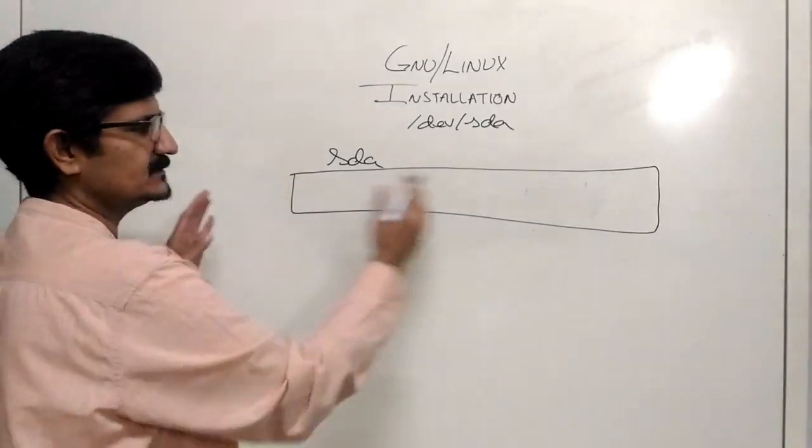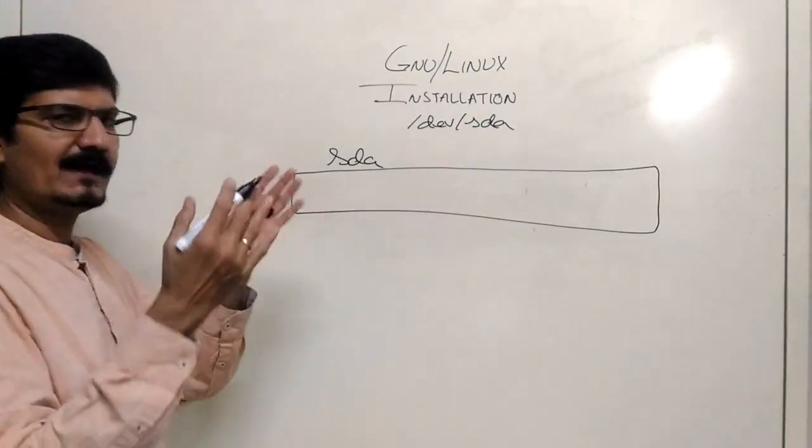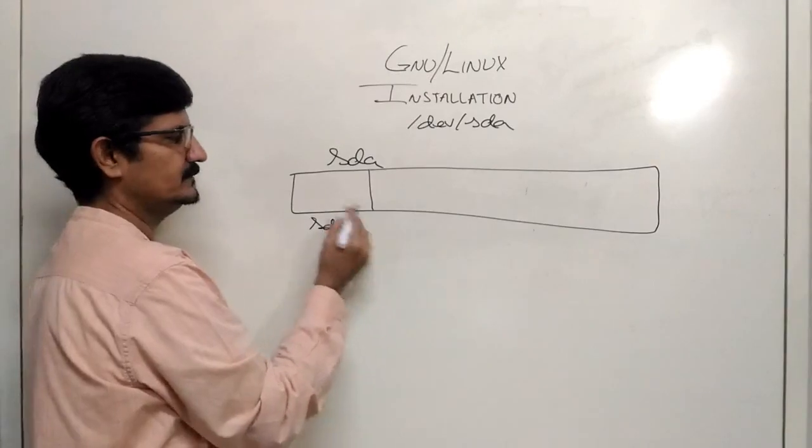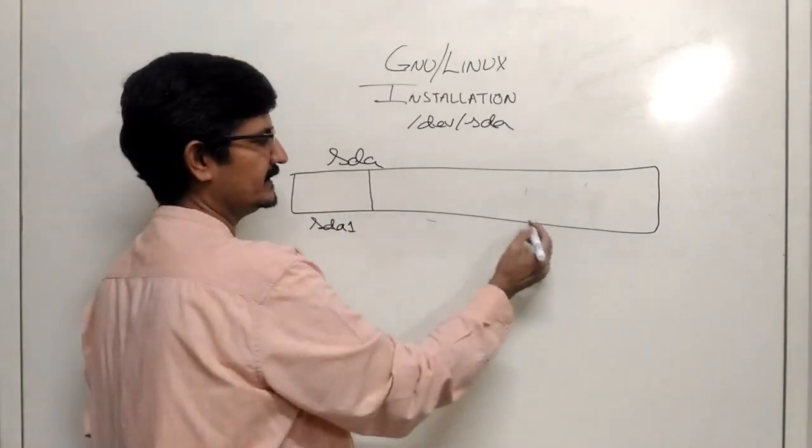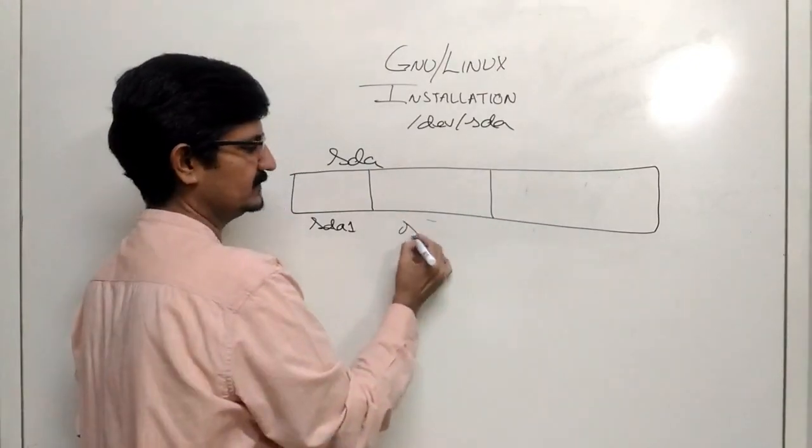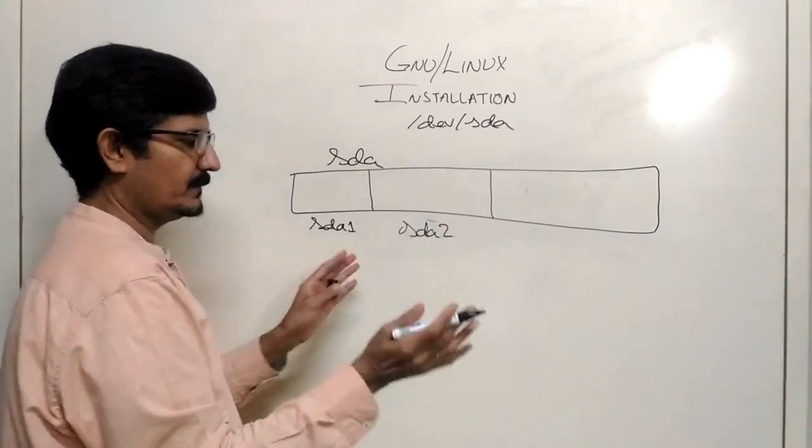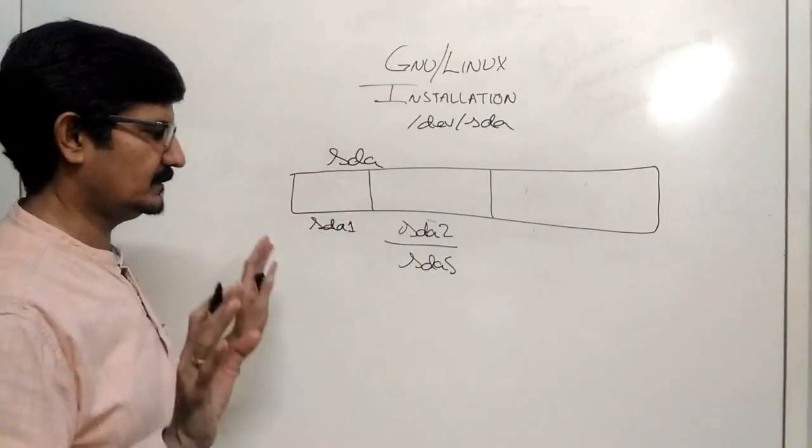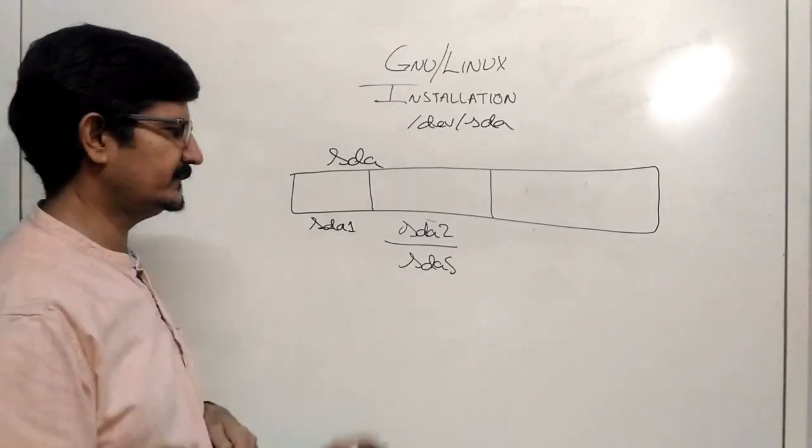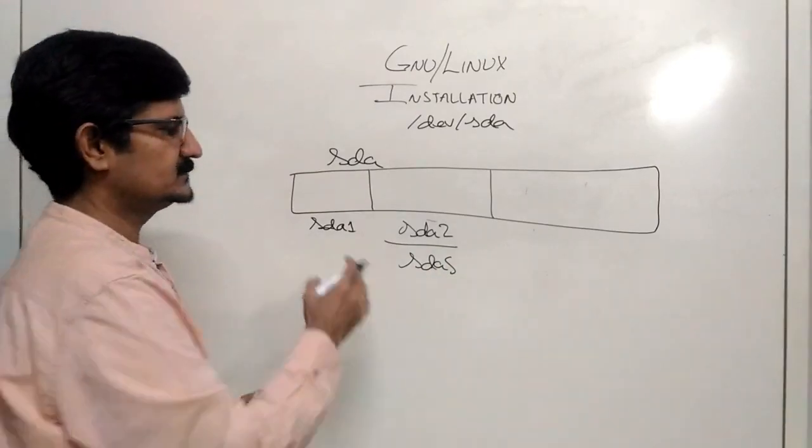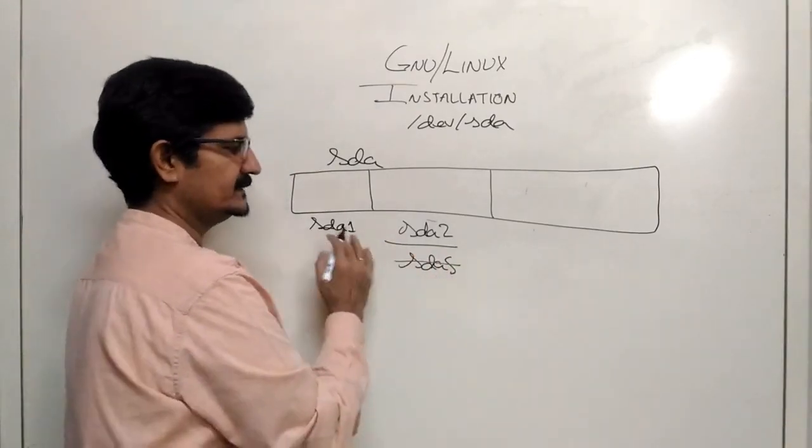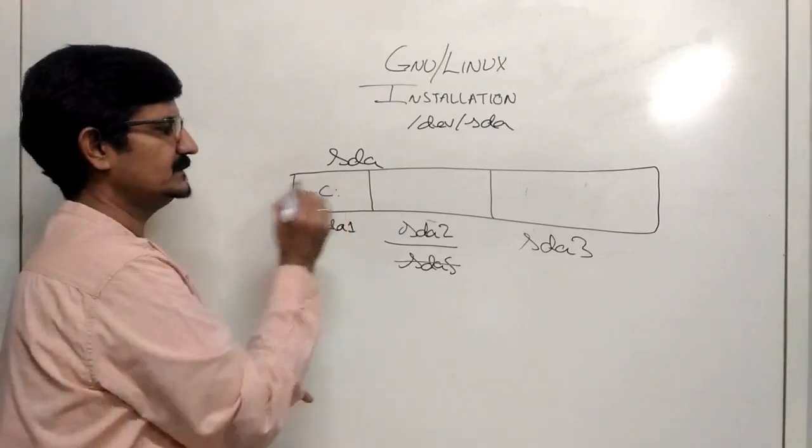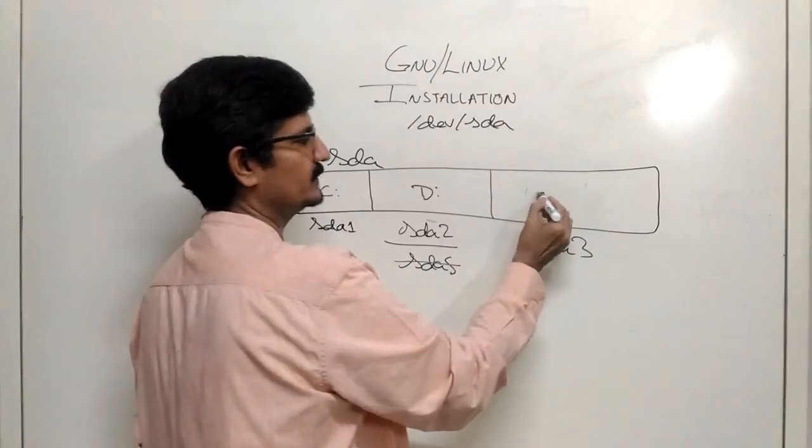Now in our scenario most probably you have the hard drive as SDA. And if you have already an existing operating system installed on it, you are probably having this as SDA1, some partition taking up some space. Another partition taking up some space. So this will be SDA2. Now probably if it is Windows it might also show up as SDA5. So in your Windows representation this could be C colon. This would be D colon and this would be E colon.